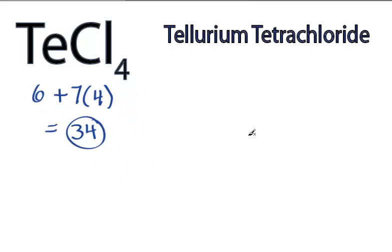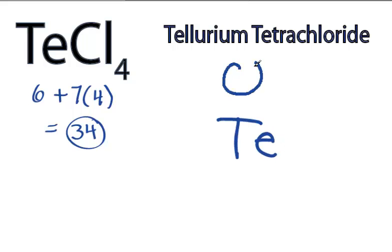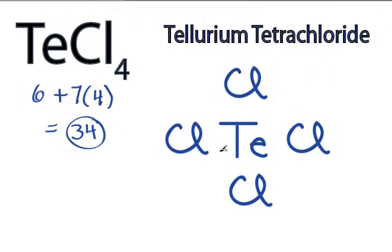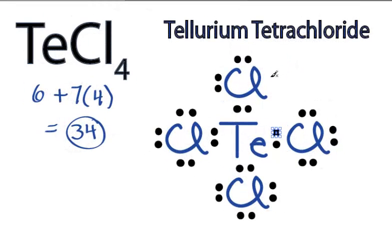Tellurium is the least electronegative, so we'll put that at the center of the Lewis structure, and then we'll put chlorines around the outside. We have a total of 34 valence electrons. We'll put 2 between atoms to form chemical bonds — we've used 8 — and then around the chlorines: 10, and 32.